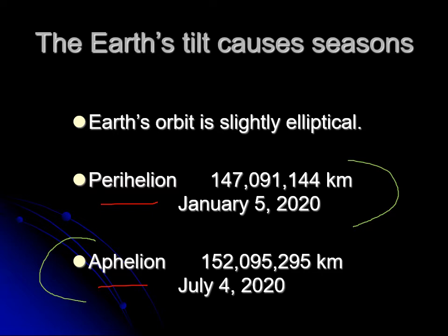This is a shock to people, because here in Texas it's hot and humid and miserable in the summer, so you'd think we must be close to the sun. But we're actually farthest from the sun in July and closest in January. Why are the seasons not lining up the way you'd expect? Remember, it's the tilt of the Earth that makes the seasons — not the distance.